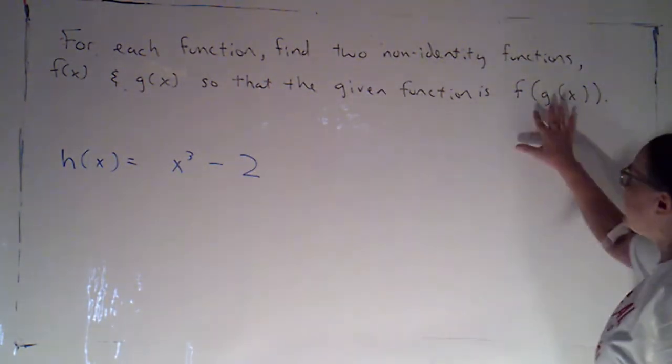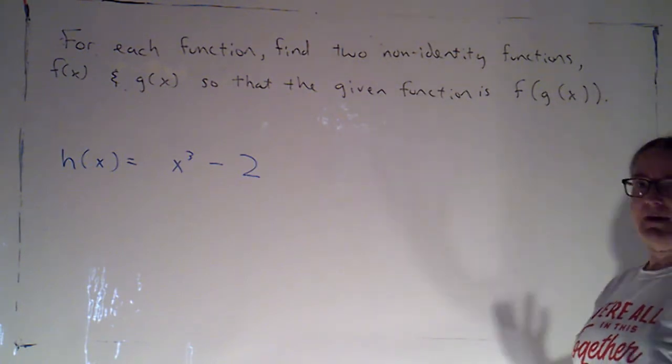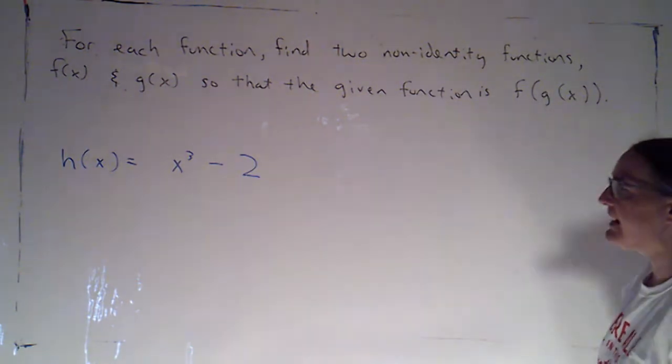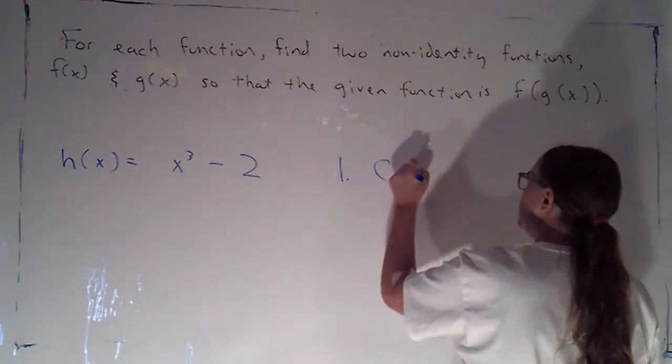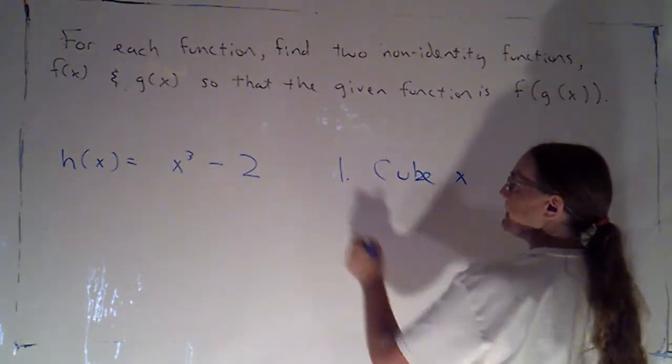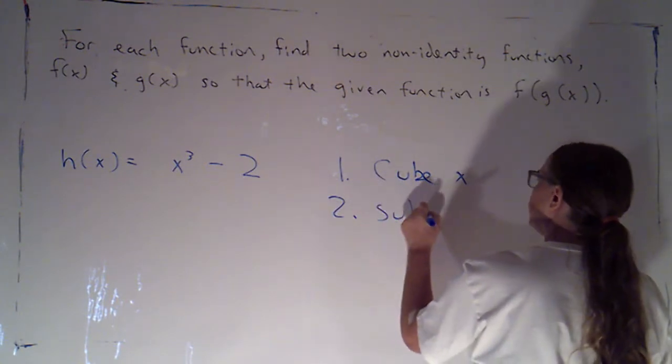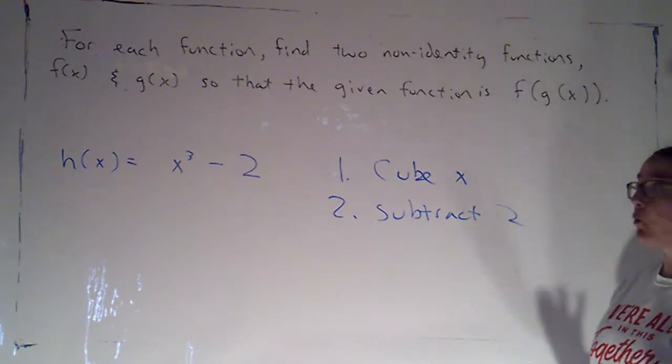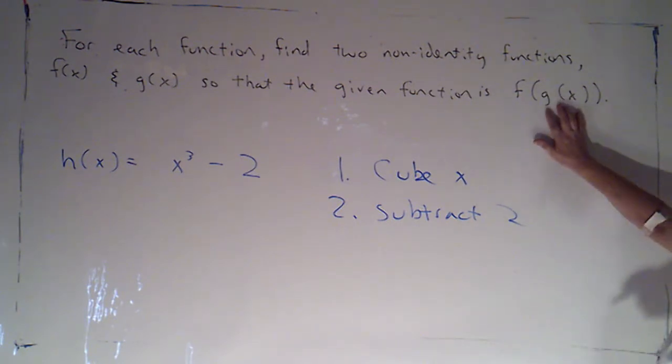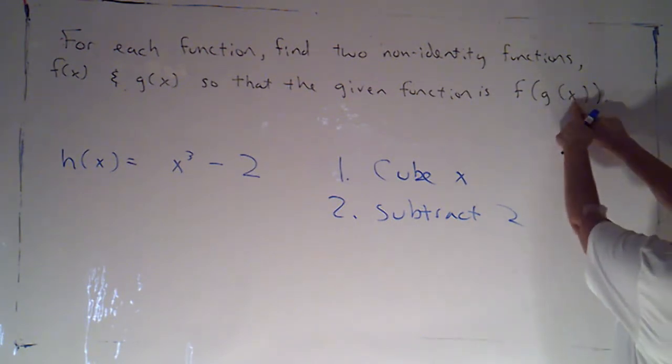So, what I want to do is think of each function as doing something. If I were evaluating h, I can see that I'm basically doing two things. I'm going to cube x and then I'm going to subtract 2, and I'm doing them in that order. If you look at f of g of x, x is here, the first thing I'm doing is g.